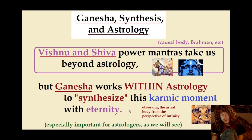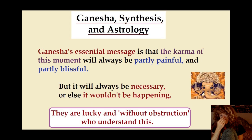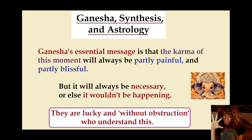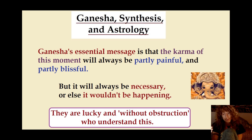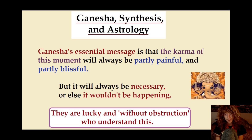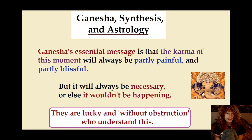This is especially important for astrologers because this is what Ganesha does. Ganesha's message is that the karma of this moment will always be partly painful and partly blissful. But it will always be necessary, or else this moment wouldn't be happening. Reality is like a lover and it comes to you with a certain nature, with a certain form that it has to be. You can't wish for your lover to be something different — you have to accept the love for what it is. That's how we have unconditional love for a lover, and that is how we experience the unconditional love of God.